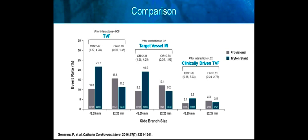Also important to note in the Triton Pivotal study: despite inclusion criteria requiring the side branch to be greater than 2.5 millimeters in diameter — angiographically equivalent to QCA of 2.25 millimeters — a large number of patients actually had stents less than 2.25 millimeters placed. When comparing target vessel failure, target vessel myocardial infarction, and clinically driven target vessel revascularization, there is a significant increase in target vessel failure in the Triton side branch group where the vessel was small. This goes against the principle that in order for two-stent bifurcation stenting to have a benefit, there must be a large enough myocardial territory.